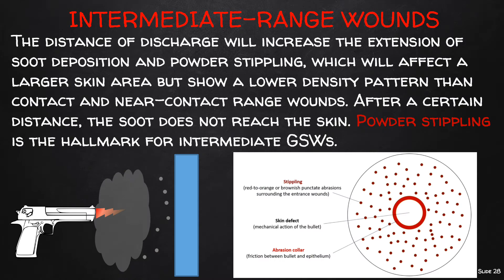In intermediate range wounds, increasing the distance of discharge increases the extension of soot deposition and powder stippling, which affects a larger skin area but shows a lower density pattern compared to contact and near-contact range wounds. When the distance becomes too great, soot deposition disappears. The hallmark of an intermediate range wound is the presence of powder stippling — red to orange or brownish punctate abrasions surrounding the entrance wound. True powder stippling is a sign of vitality, meaning the subject was still alive before being shot. The lesions produced by stippling cannot be washed off, distinguishing them from soot.